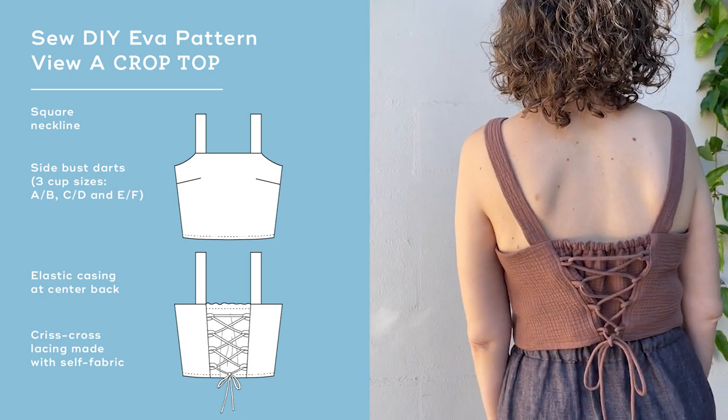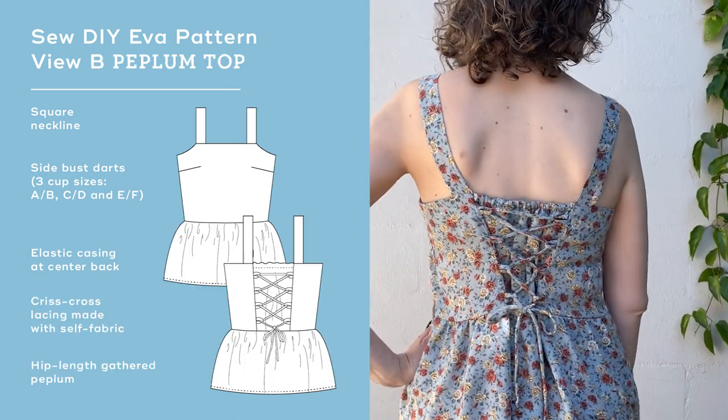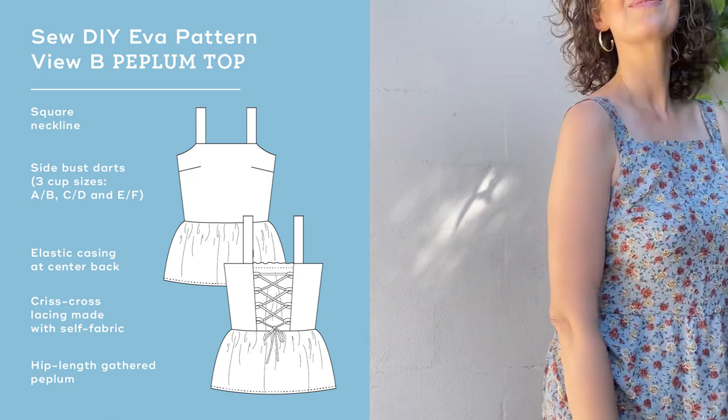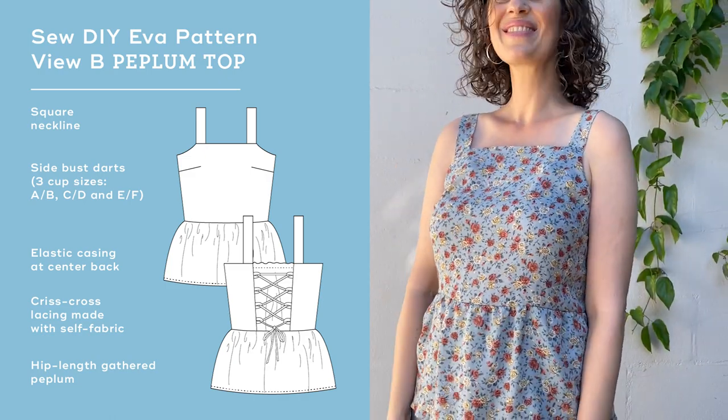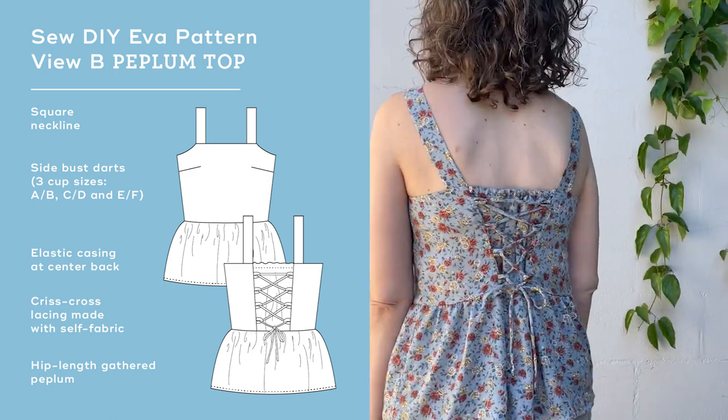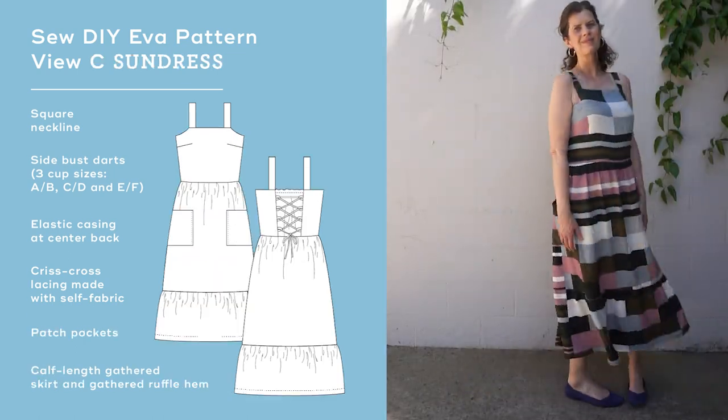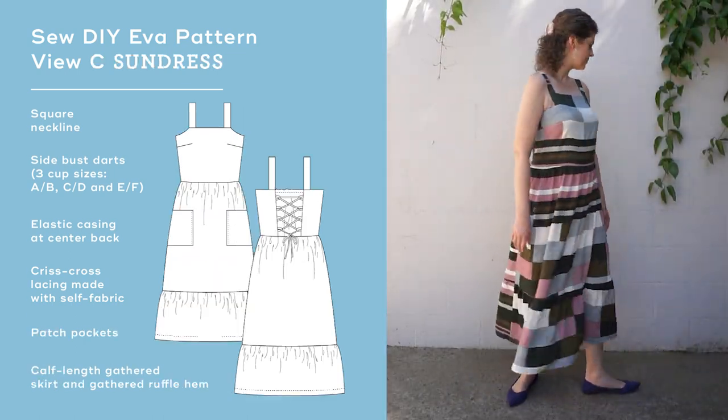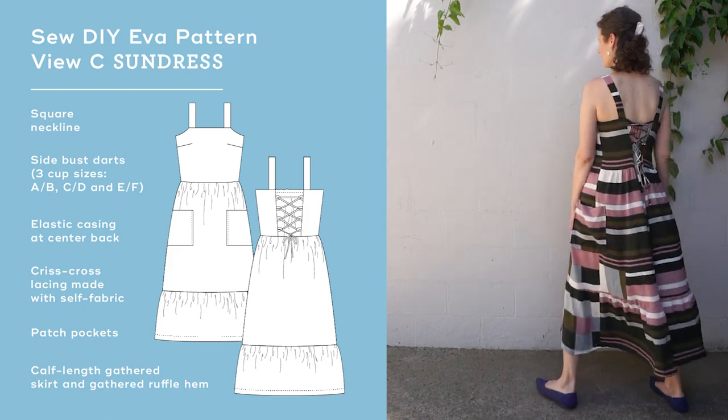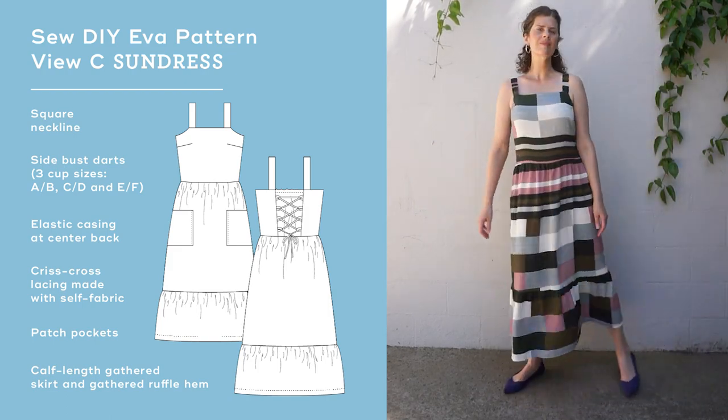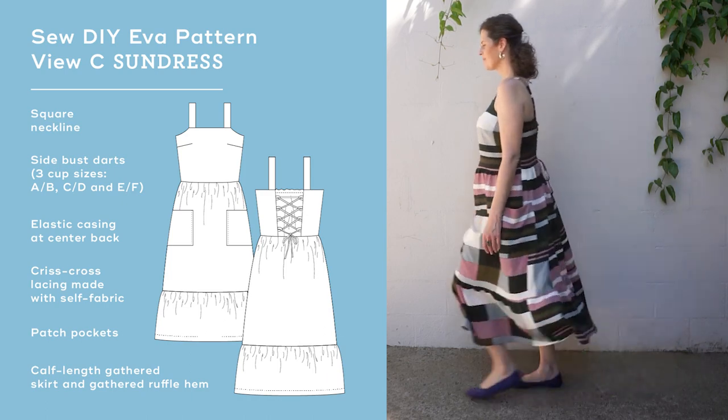View A is a crop top that ends at the waistline. View B has a ruffled peplum that ends at the high hip. And View C is a full-length dress with a calf-length skirt and ruffle at the hem. Plus, View C has patch pockets.